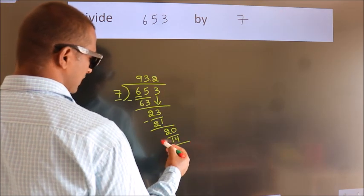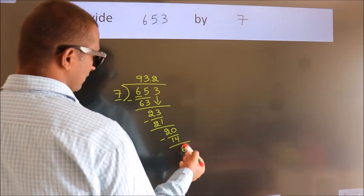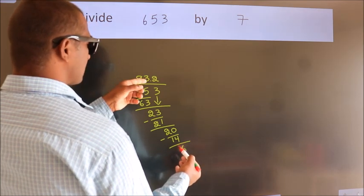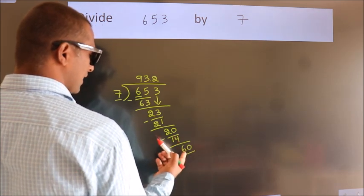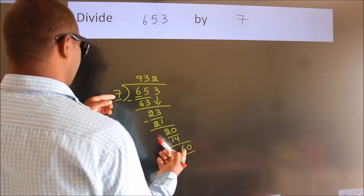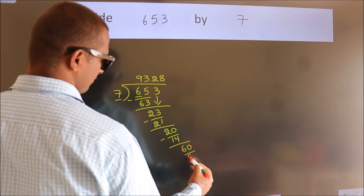Now we subtract. We get 6. After this, we already have the decimal, so directly take 0. So 60. A number close to 60 in the 7 table is 7 eights, 56.